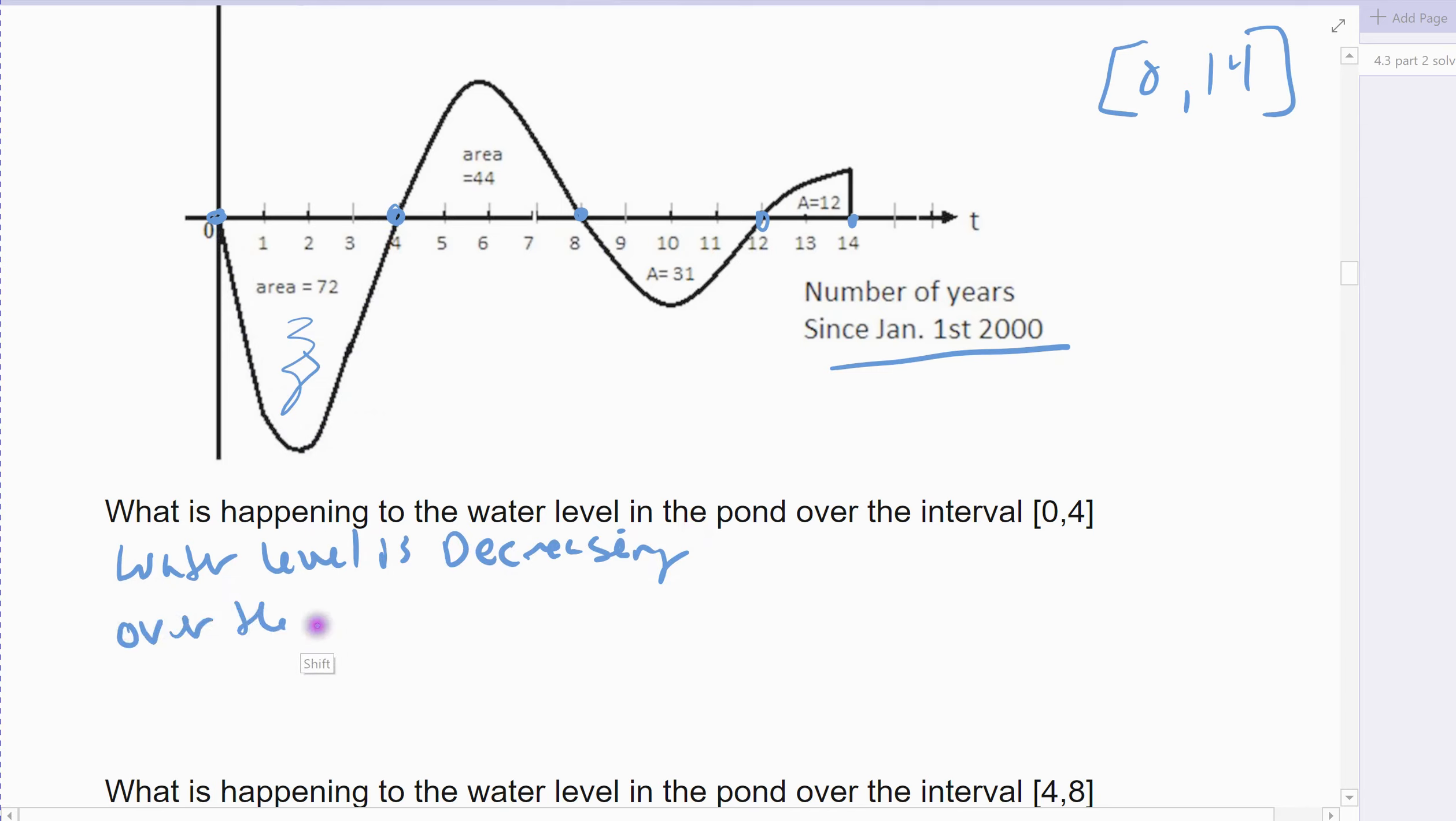So over the years 2000 to 2004, the pond had a net loss. The area would be 72. Remember, 72 represents thousands of gallons of water. And so there was a net loss over those four years. It went through a drought season, a net loss of 72,000 gallons of water.